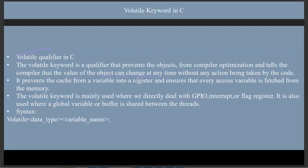Volatile directly fetches the data from the main memory. For example, a thread is getting its value from the shared variable. And also, the shared variable is maintaining the local copy of that data in the cache.